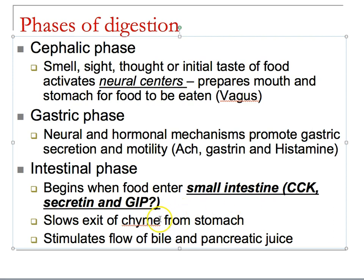GIP slows the exit of materials from the stomach — remember it's about two tablespoons worth — so the signaling coming from the small intestine slows things down, increasing the amount of time materials spend inside the small intestine, where true chemical digestion and therefore absorption occurs.